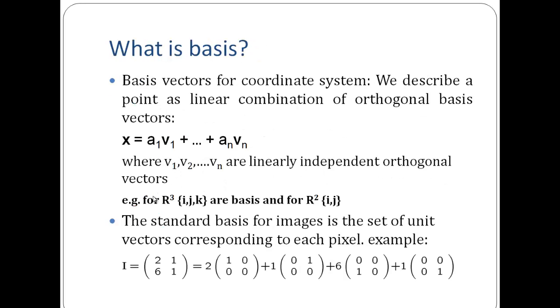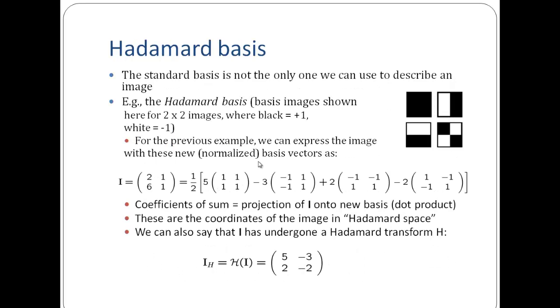So I try to represent the same 2, 1, 6, 1 image as a combination of these Hadamard vectors. And I can find out the values of these coefficients. And then I can say that this is my representation 5, minus 3, plus 2, minus 2. These are the coefficients of my Hadamard space. And I then can represent this image in the Hadamard space like this. And I can say that this image has undergone a Hadamard transformation.